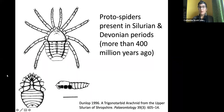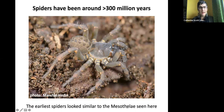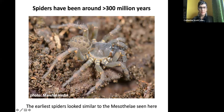Spiders have been around a very long time. Proto-spiders arose more than 400 million years ago in the Silurian and Devonian, and the first true spiders arose just over 300 million years ago. The mesothelae from Asia still look similar to what those earliest spiders looked like, with segmented abdomens. This modern spider is probably representative of what the earliest spider about 300 million years ago looked like.